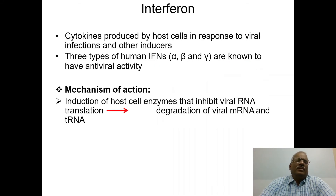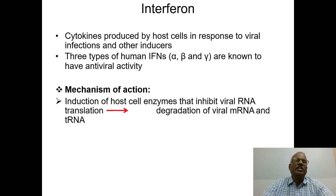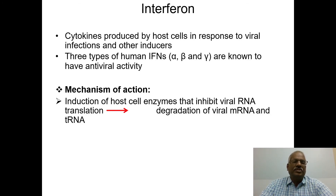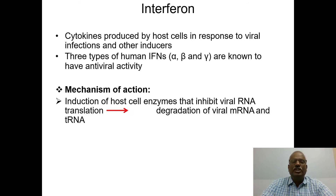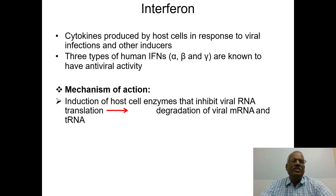Interferon: interferons are cytokines produced by host cells in response to viral infections. There are three types of human interferon: alpha, beta, and gamma — all have antiviral activity. The mechanism of action: they induce host cell enzymes that inhibit viral RNA translation, leading to degradation of viral mRNA and transfer RNA.